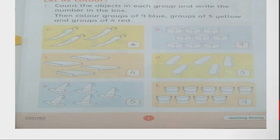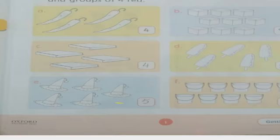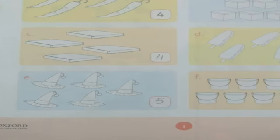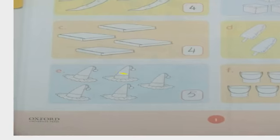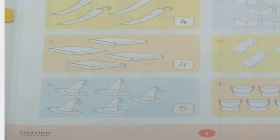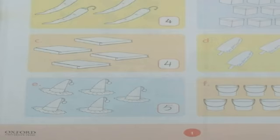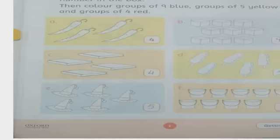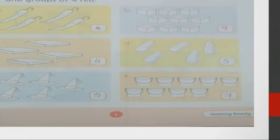Now we will do part E. What do we have in part E? Birthday caps. We will count: one, two, three, four, five. In the block we will write five, and we will color them yellow.